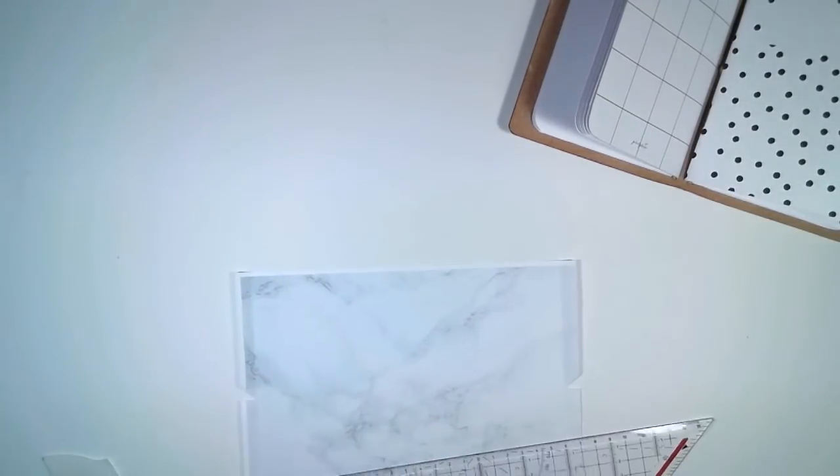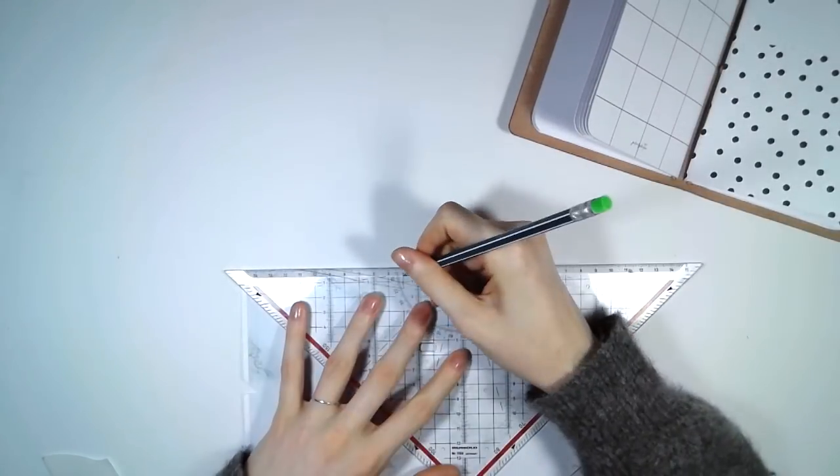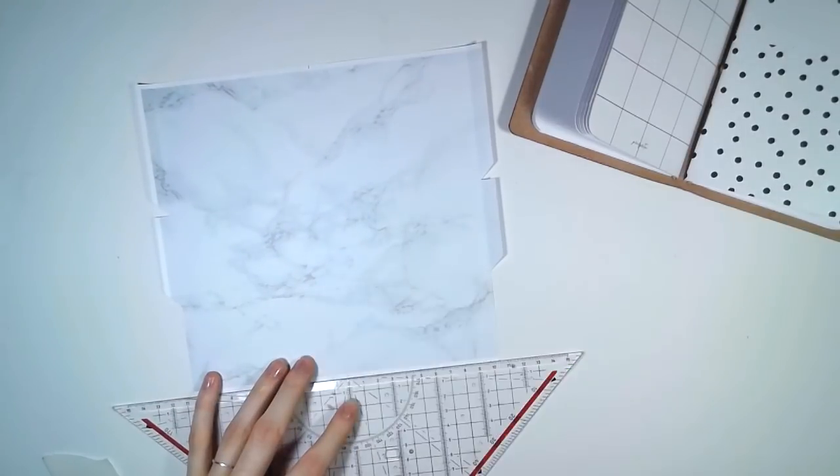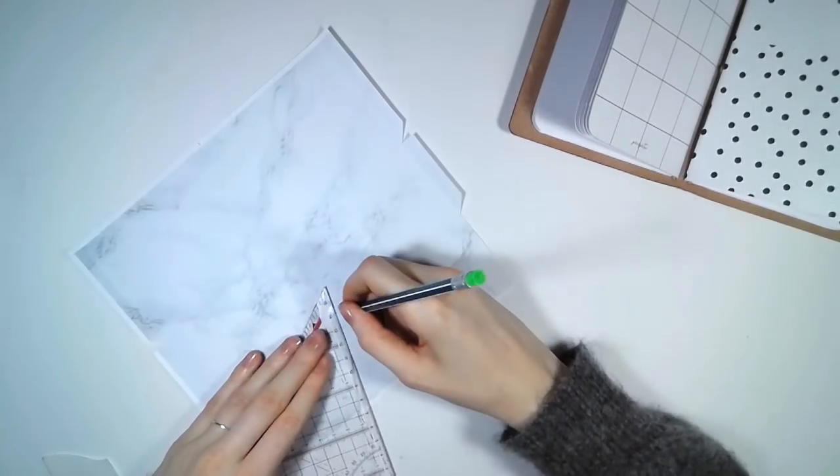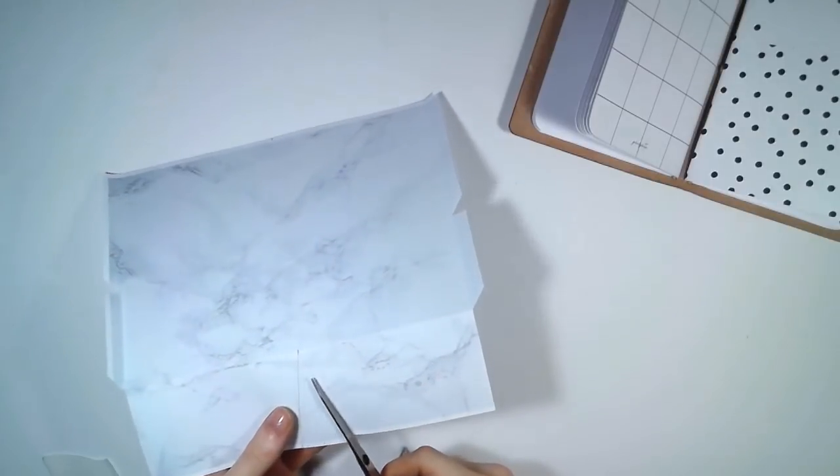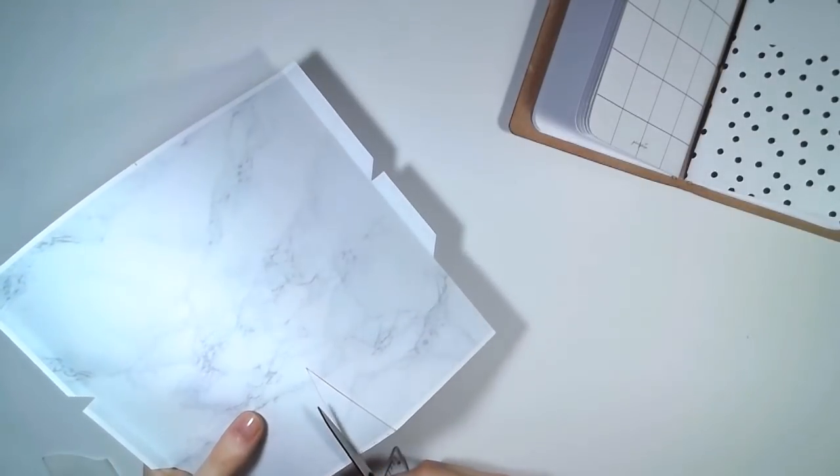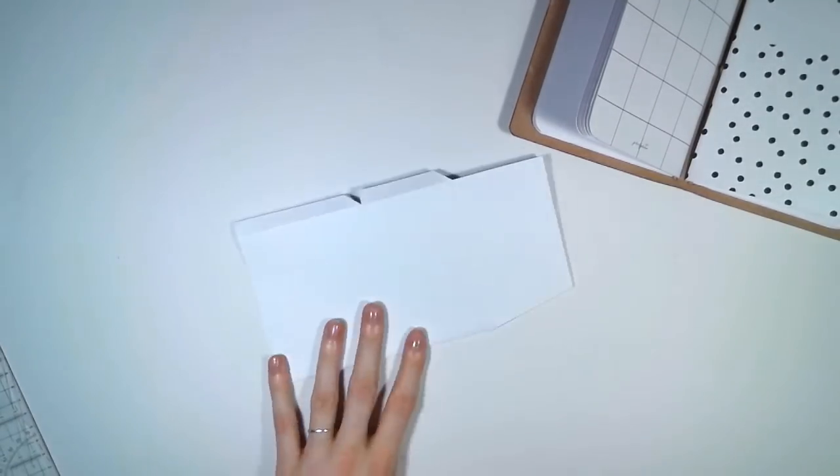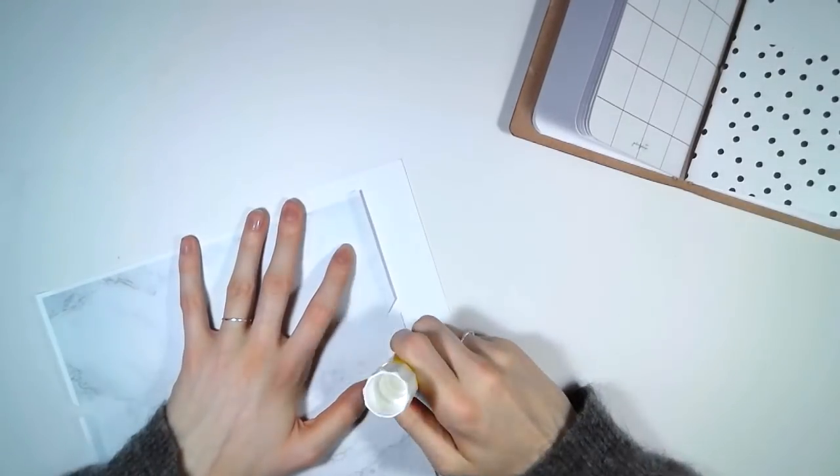Before we're going to glue everything together, we're going to mark the middle of the page on top and bottom of the paper because we're going to make a slit at the pocket. I decided to measure 1.5 from the middle of the paper and then I just need to cut out the V. To make the folding easier I'm going to make a fold with the spatula in the middle of the paper and then I'm going to glue everything together with a glue stick.